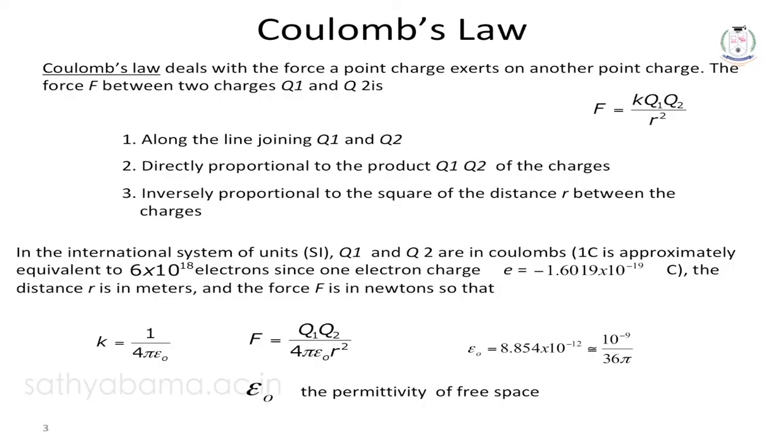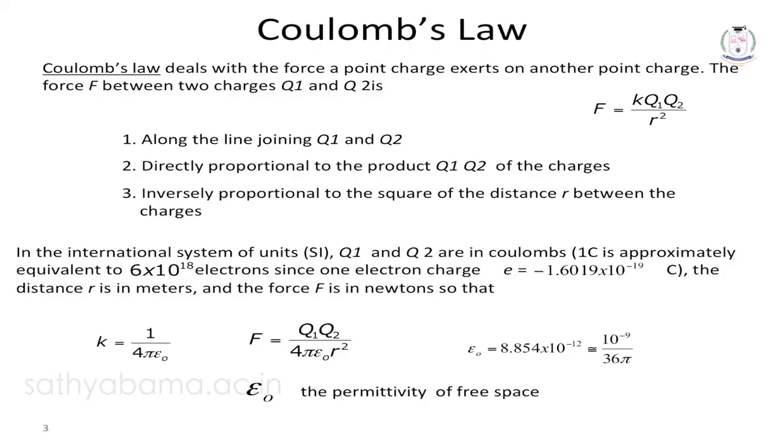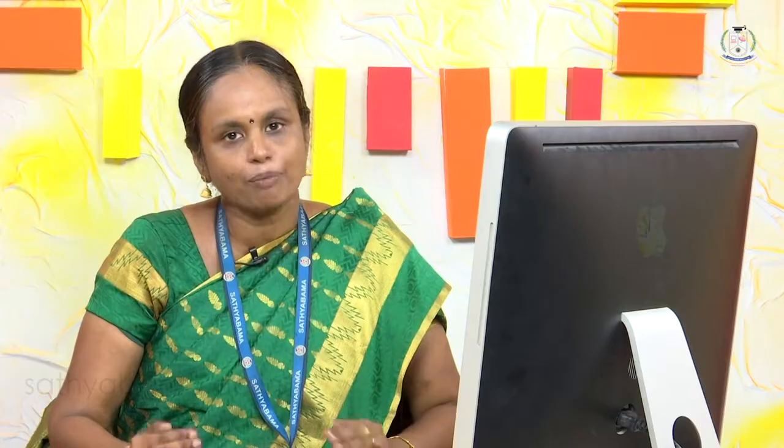Moving on to Coulomb's law, consider two point charges Q1 and Q2. If one is positive and another is negative, there will be an attractive force. If both charges are of the same sign, there will be a repulsive force. According to Coulomb's law, force F equals Q1·Q2 by R squared — directly proportional to the magnitude of the charges and inversely proportional to the square of the distance between them.